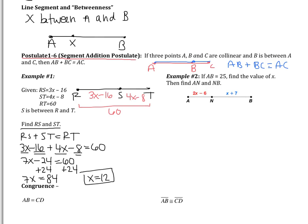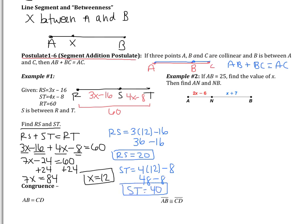That's not my final answer, though. The question is find RS and ST. So I need to substitute back in now. RS is going to be 3 times 12 minus 16. 3 times 12 is going to be 36. So I get 36 minus 16. So RS is going to be 20. ST is going to be 4 times 12 minus 8. This is 48 minus 8. So ST equals 40.